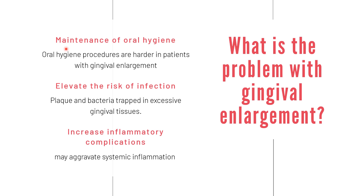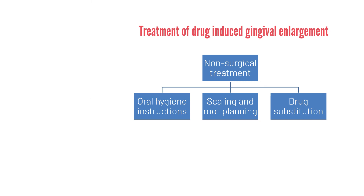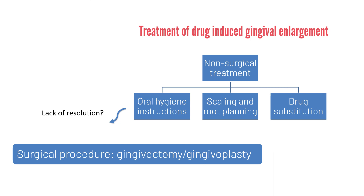Gingival enlargement presents three main problems. It hinders maintenance of oral hygiene, making it harder for affected patients. It can elevate the risk of infections related to plaque and bacteria trapped in excessive gingival tissues, and this could lead to increased inflammatory complications, potentially aggravating systemic inflammation. Treatment can be classified as non-surgical — including oral hygiene instruction, scaling and root planing, and drug substitution — or surgical, which is gingivectomy or gingivoplasty, if there is no response to non-surgical treatment.